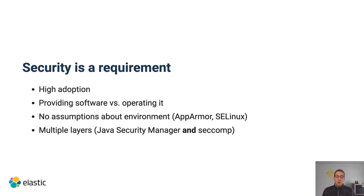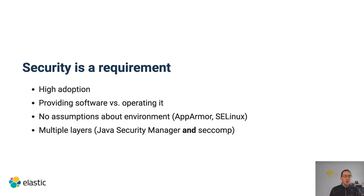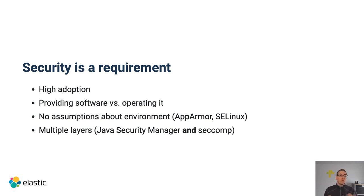It probably makes sense to have multiple layers of security up and running. In terms of Elasticsearch, this usually means the Java Security Manager is enabled and SecComp is enabled. We also do a few other things, but for example we try to prevent execution of arbitrary commands with both of those layers, so even if one fails, there's still another.